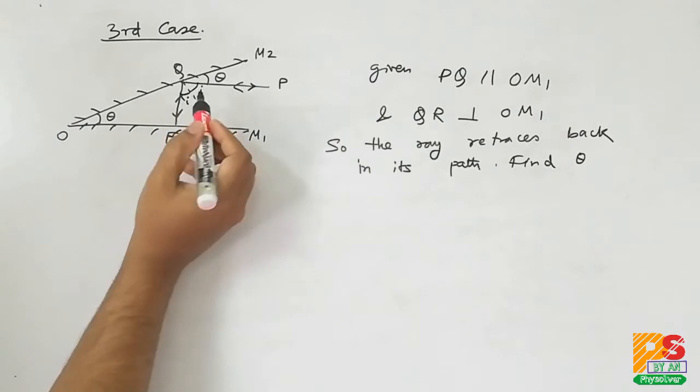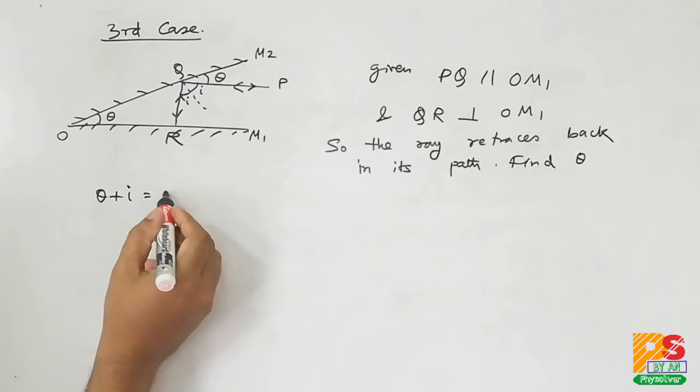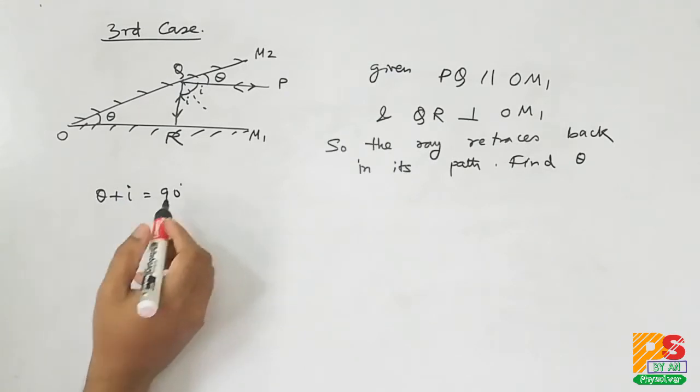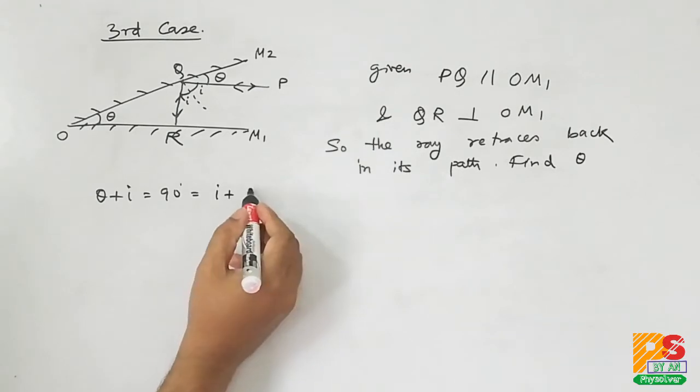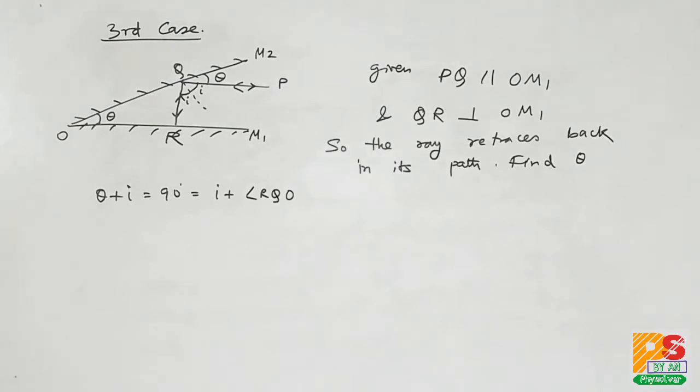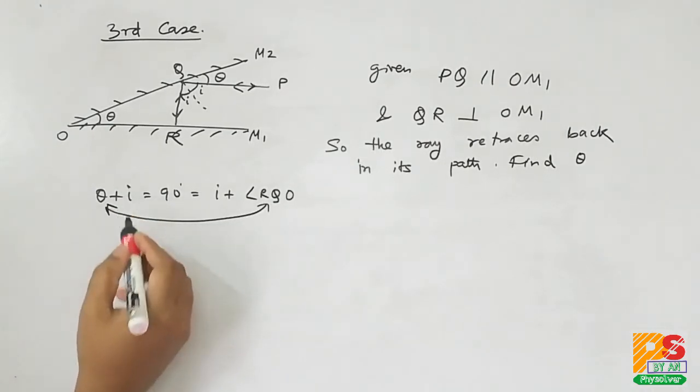Let the angle of incidence at Q is I, so the angle of reflection is also I. Theta plus I equals to 90 degrees, which equals I plus angle RQO. Clearly angle RQO should be equal to theta.